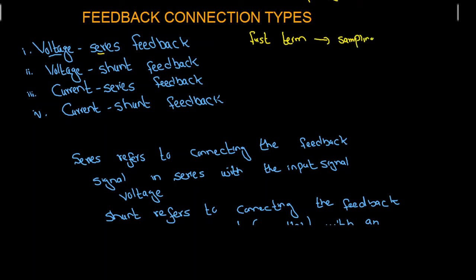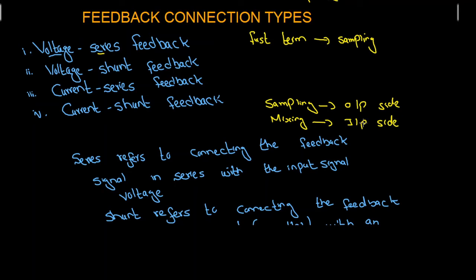Sampling is done at the output side of the feedback network, and mixing is done at the input side. So since the first term indicates sampling and sampling is done at the output side, in voltage-series feedback we have voltage sampling, meaning the output signal is voltage.